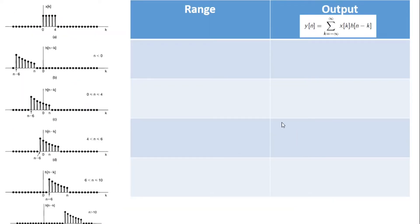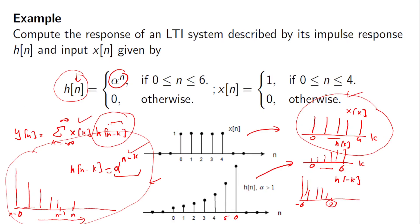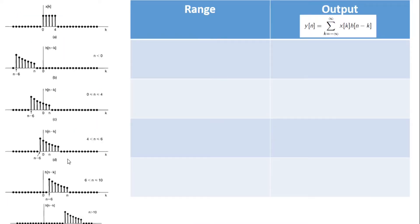The function x[k] is expressed over a given range, and h[n−k] similarly. As the first step, if the value of n is less than zero, there is no overlap between x[k] and h[n−k], so y[n] = 0. This covers all values from minus infinity to n = −1.